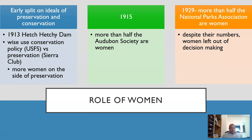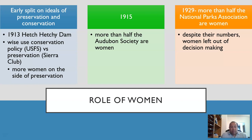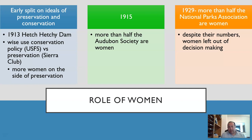In terms of the role of women during this time, more women were on the side of preservation during the split between preservation and conservation. Women weren't really allowed into the main policy conversation, but the societies — the Sierra Club, the Audubon Society, and the National Parks Association — were a way for women to get their voice out there and open up the conservation conversation to more people.